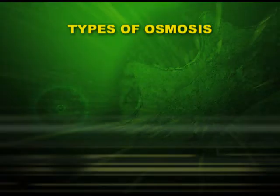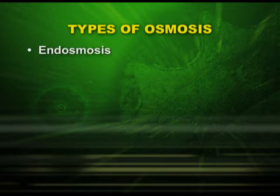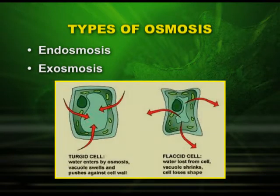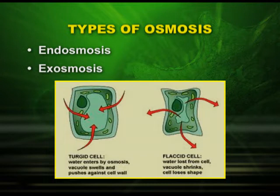Osmosis is of two types: endosmosis and exosmosis. In the first diagram we see the turgid cell — water enters by osmosis, the vacuole swells up and pushes against the cell wall. In the second diagram, you see the flaccid cell, where water is lost from the cell and the vacuole shrinks.